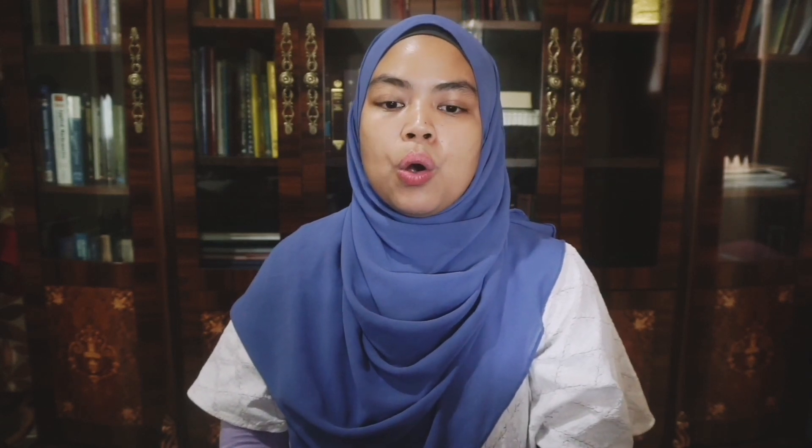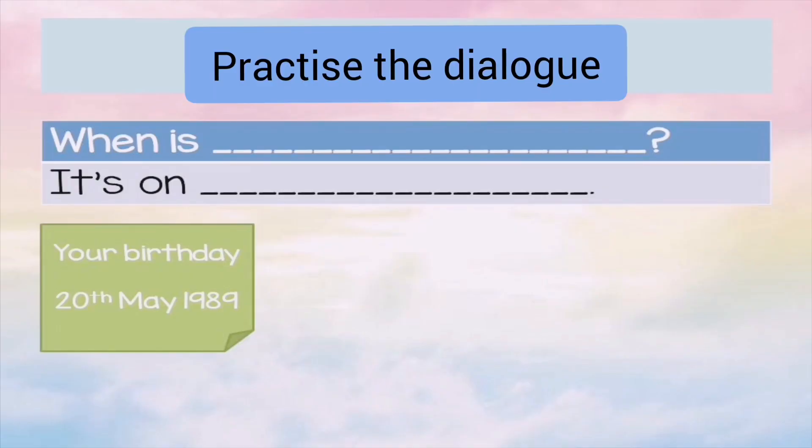Now we want to ask when something is happening. The question form would be 'When is...?' and you answer 'It's on the 10th.' Notice that in this question you have to add 'on.' In the previous question when you ask for the date, there's no 'on.' So let's try number one: 'When is your birthday?'